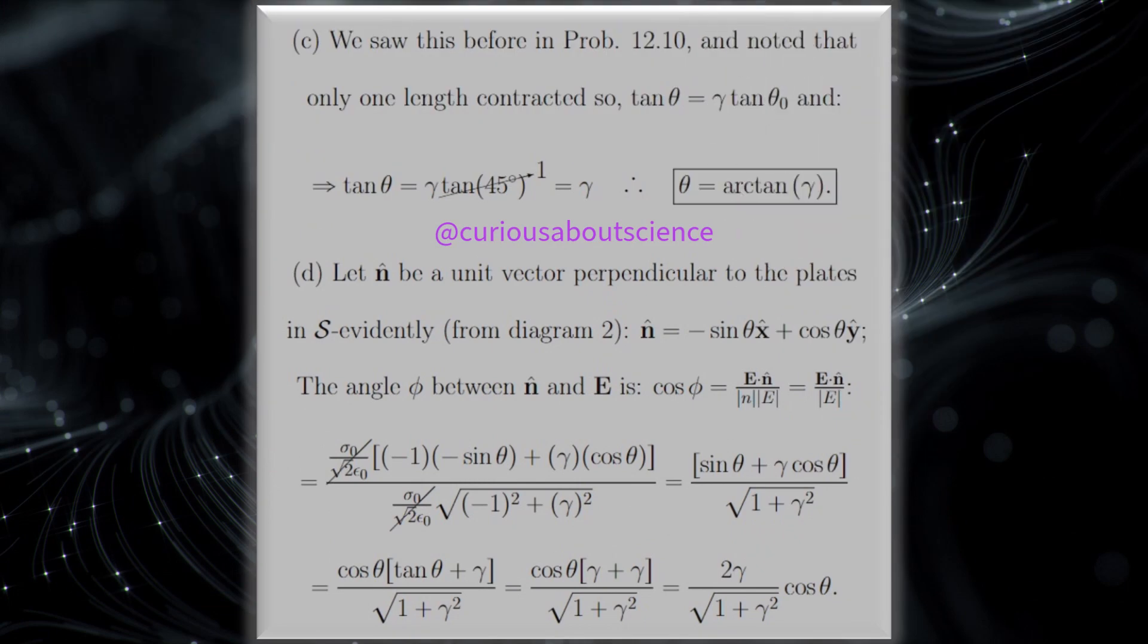Alright, so then in part C here, we saw that before in problem 12.10, and noted that only one length contracted. So we saw that tangent θ is equal to gamma tangent θ₀. Therefore tangent θ is equal to gamma tangent θ₀, which was at 45 degrees. We know 45 degrees for tangent leads to 1, so tangent θ is equal to gamma. So if we want to know what angle it rests at with the Lorentz contraction, we see that θ is equal to the arctangent of gamma. Not too bad. That's actually a pretty quick result.